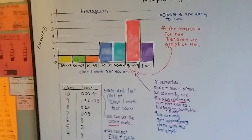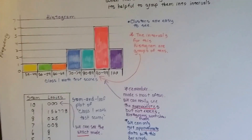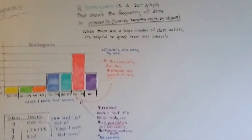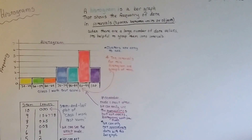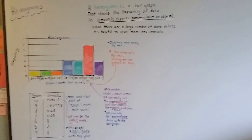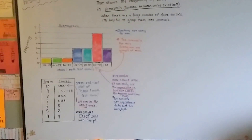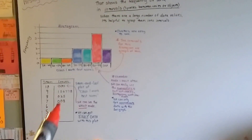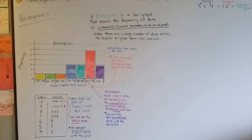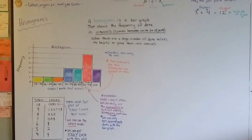The only difference is the stem and leaf plot shows exact numbers and the histogram doesn't. So if you had 100 numbers that you needed to put on a chart, the histogram would be a great one to use because you could just group them all together in the intervals. The stem and leaf plot is more exact.